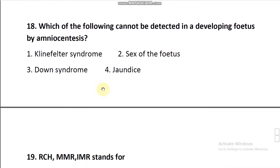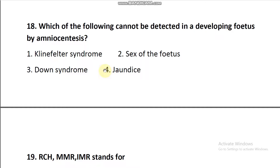Question number 18: Which of the following cannot be detected in a developing fetus by amniocentesis? Options: Klinefelter syndrome, sex of the fetus, Down syndrome, or jaundice. Jaundice cannot be detected — it is a digestive disorder and is not detected by amniocentesis. So option number four is the correct answer.